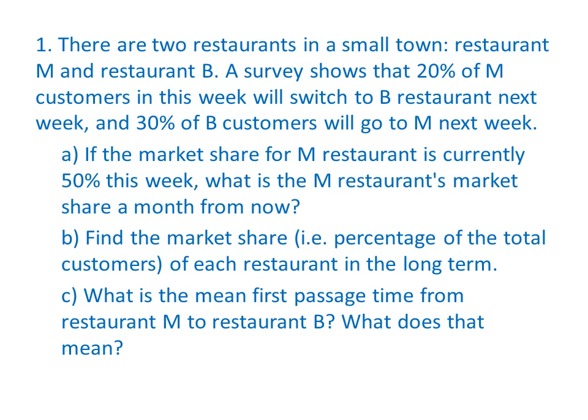The two possible values are M or B. The very first thing is to put the one-step transition probability matrix together — that's matrix P. Based on the data in this problem, if a person is eating at restaurant M right now, there is an 80% chance they will continue eating at restaurant M next week, and a 20% chance they will switch to restaurant B. And if a person is eating at restaurant B right now, there is a 30% chance they will switch to restaurant M, and a 70% chance they will continue eating at restaurant B.